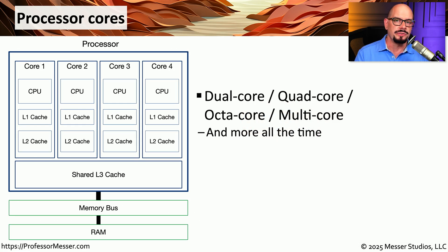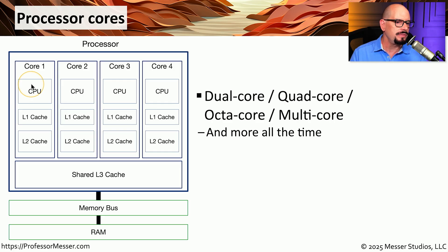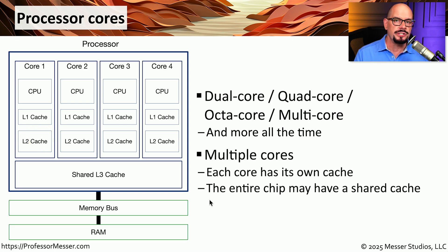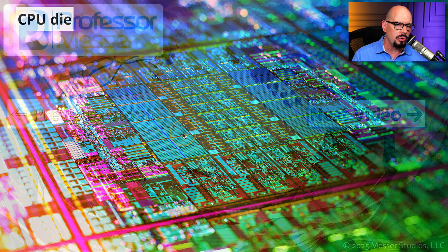We often refer to processors from Intel, AMD, and ARM as CPUs — individual single devices. But inside of that single CPU package are a number of individual processors referred to as processor cores. You'll often see a processor referred to by the number of cores, such as an 8-core or 16-core processor. Inside each core, you'll find an individual CPU and cache memory specific to that core. This means multiple cores can perform multiple instructions simultaneously, increasing the overall efficiency of the computing process. If you look at a magnified view of the CPU die, you can almost make out the individual cores — this appears to be a rendering of a 16-core CPU, where you can see the individual CPUs and cache memory for each core.